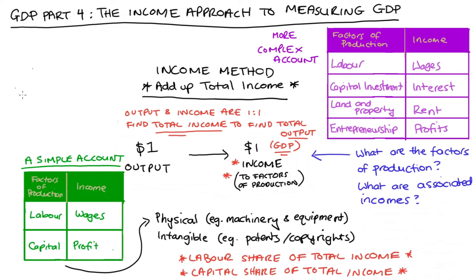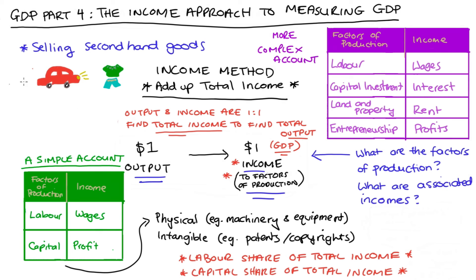As I've said throughout all these videos on GDP, GDP tracks the level of production within a country over a period of time. At the heart of our income approach is that for every $1 worth of production there'll be a corresponding $1 worth of income that goes to the factors of production. Some things might look like income but will not count as income in this approach because they don't correspond to any productive activity. For instance, if you resold some second-hand goods — say a car or some clothing — the money you get from that sale will not count as income, because it does not correspond to any new productive activity. Relatedly, capital gains will not be counted as income either.